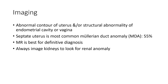Imaging findings include abnormal contour of the uterus and/or structural abnormality of the endometrial cavity or vagina. Septate uterus is the most common Müllerian duct anomaly, accounting for around 55%. MRI is best for definitive diagnosis. Always image the kidneys to look for urinary anomalies.